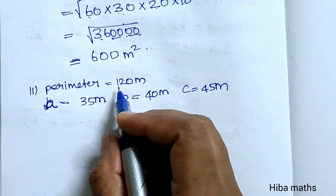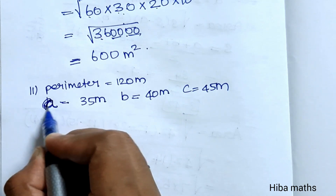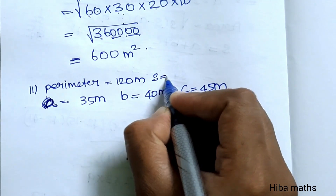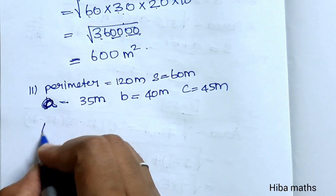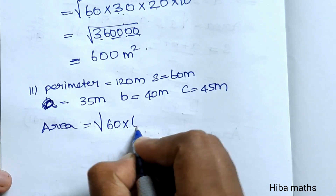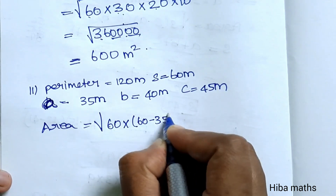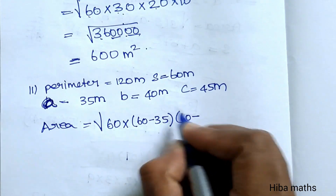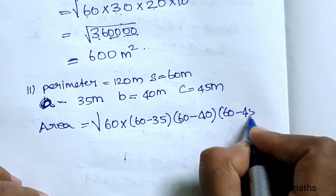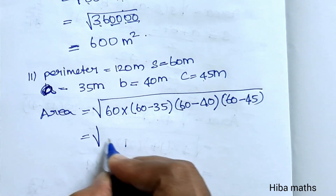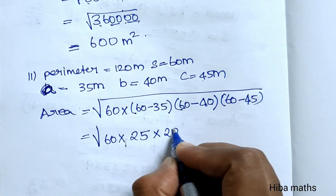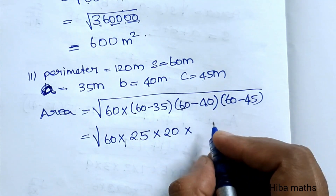For the second plot: perimeter is 120 meters and sides are A equals 35 meters, B equals 40 meters, C equals 45 meters. S for the second plot is 60 meters. Using Heron's formula, we directly substitute: root of 60 into (60 minus 35) into (60 minus 40) into (60 minus 45), which is root of 60 into 25 into 20 into 15.